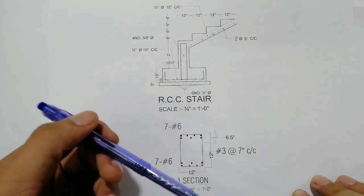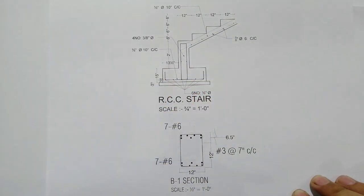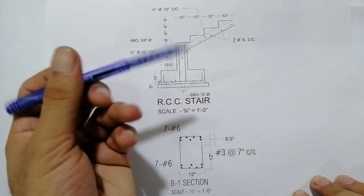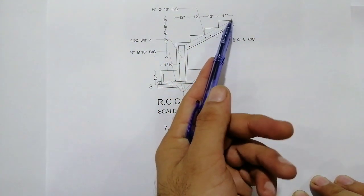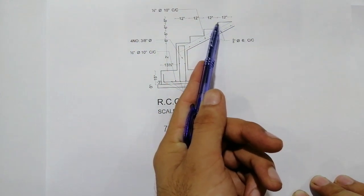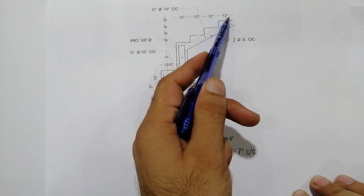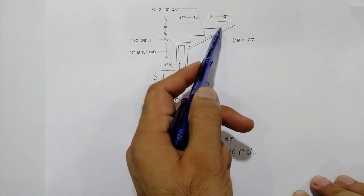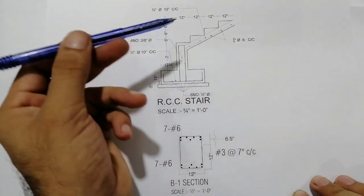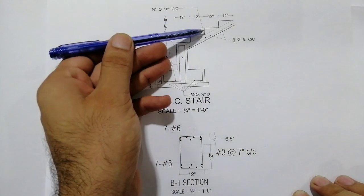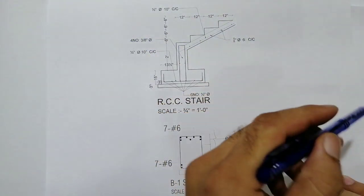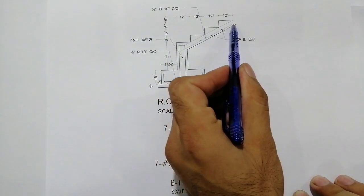Press the bell icon to get notifications if you are new on this YouTube channel. First of all, I will discuss the normal things about the tread and riser. This is a 12-inch tread of the staircase, as you can see in this drawing - 12 inches. And its riser size is 6 inches.